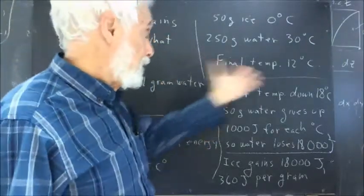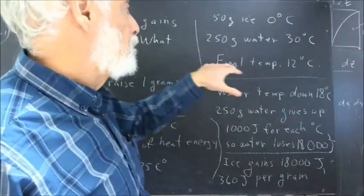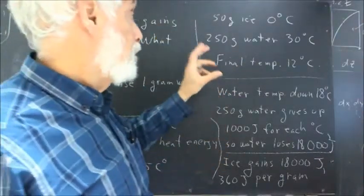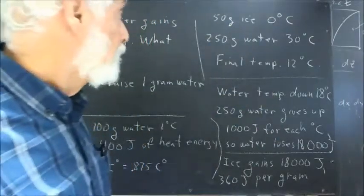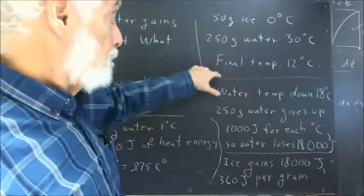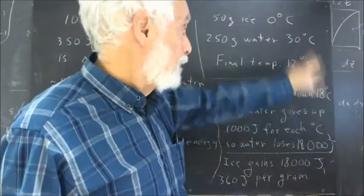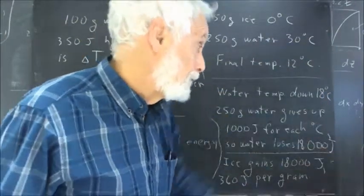Okay, now, how do we analyze this? We want to know how much energy it takes, how much heat energy it takes to melt 50 grams of ice. Okay, and we should be able to conclude that from this information. Well, water temperature goes down from 30 to 12, that's 18 Celsius degrees.